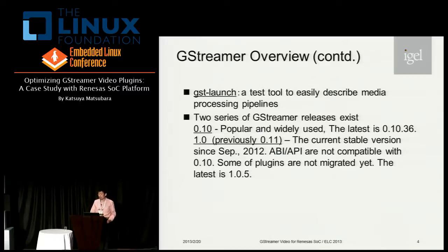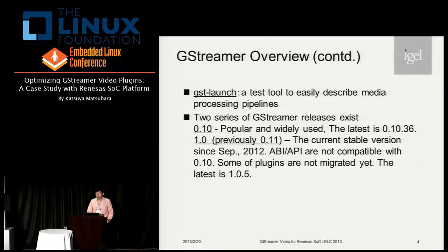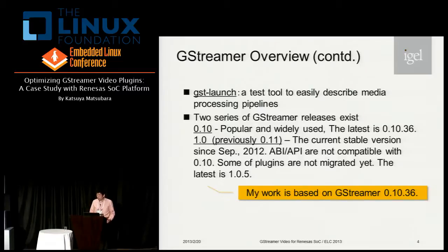Before moving on to the main talk, I should mention the version issue. Currently the community has released two threads of GStreamer version. Version 0.10 is popular and widely used at the present moment — the latest version of 0.10 is 0.10.36. Version 1 is a current stable version since last September, but ABI and API are not compatible with the 0.10 thread, and some plugins are not yet migrated. My work is based on the latest 0.10 GStreamer because I started this work before version 1 had been released.